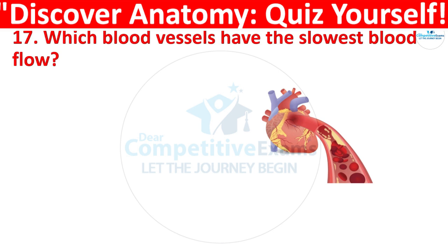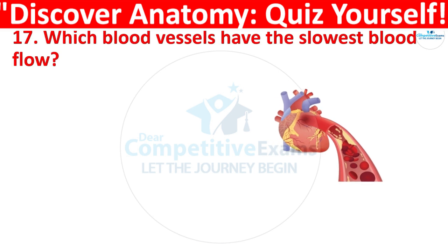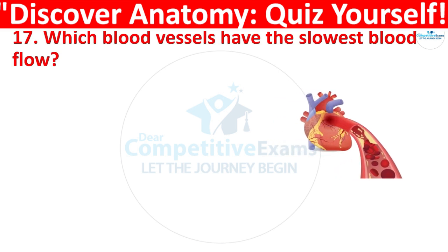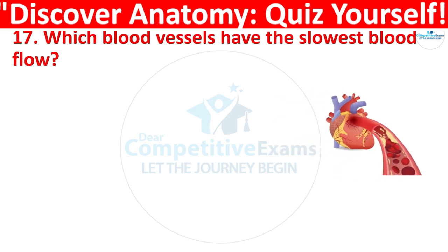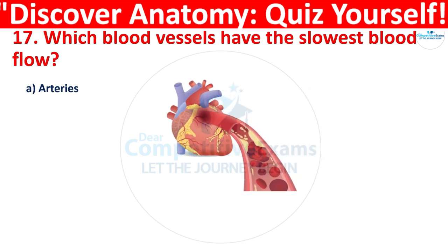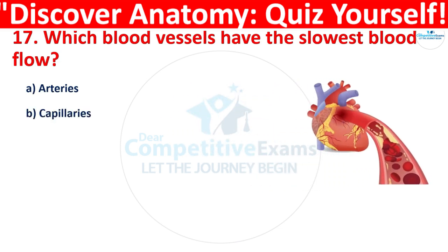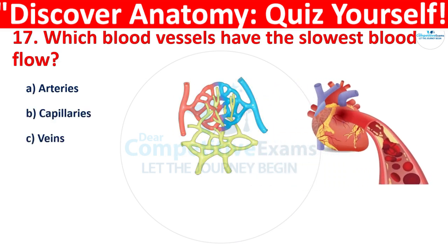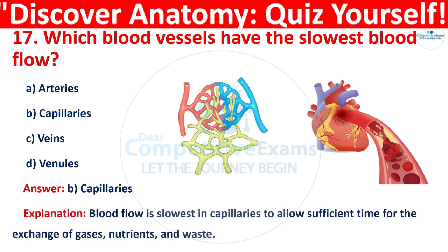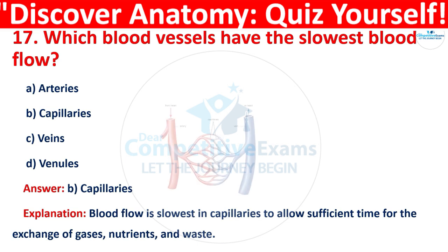Question 17: Which blood vessels have the slowest blood flow? The options are: arteries, capillaries, veins, or venules. The correct answer is B, that is capillaries. Blood flow is slowest in capillaries to allow sufficient time for the exchange of gases, nutrients, and waste.